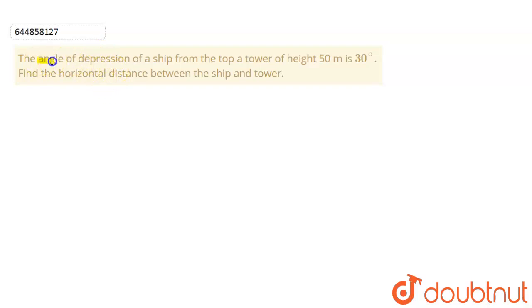So this is the question: The angle of depression of a ship from the top of the tower of height 50 meters is 30 degrees. Find the horizontal distance between ship and the tower. So now let us make the figure first.